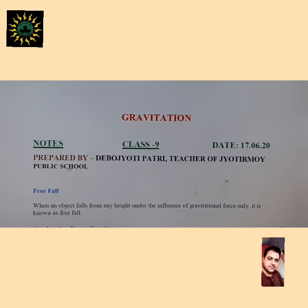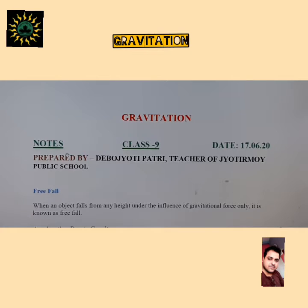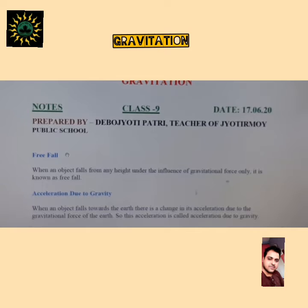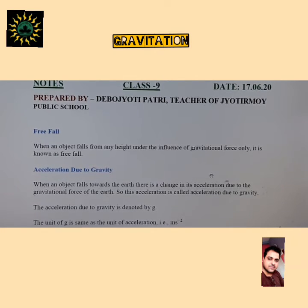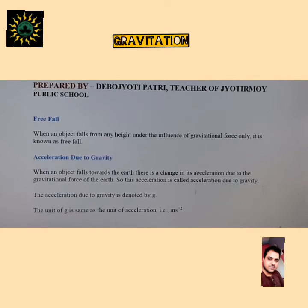Good morning everyone. We already discussed the introductory part on the gravitation chapter. In the previous class we observed how gravitational force acts between any two objects of definite masses. In today's class we will study the free fall of an object. When an object falls from any height under the influence of gravitational force only — with no other force acting — it is known as free fall.